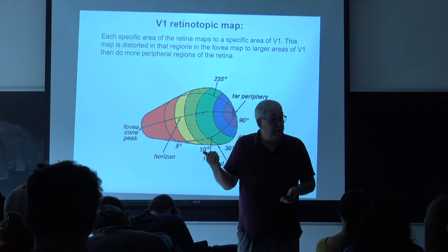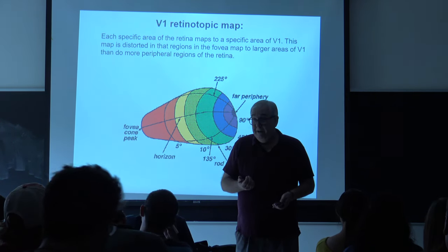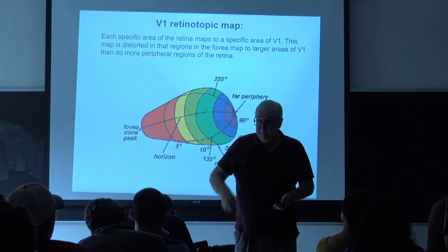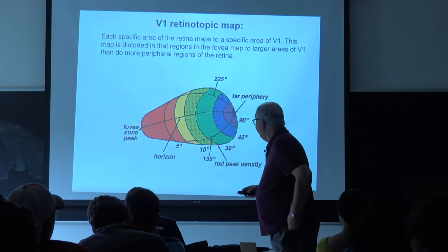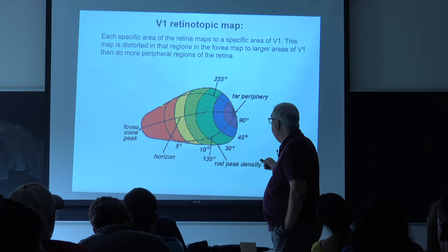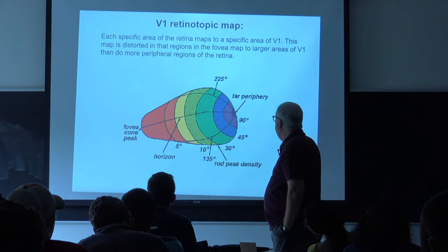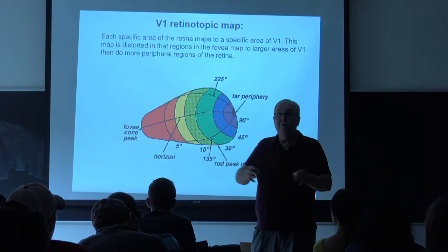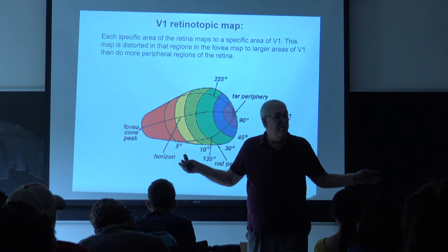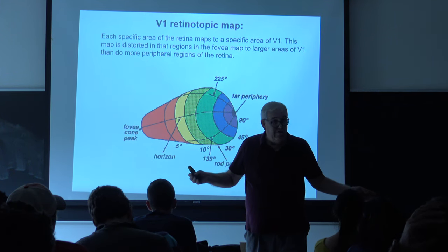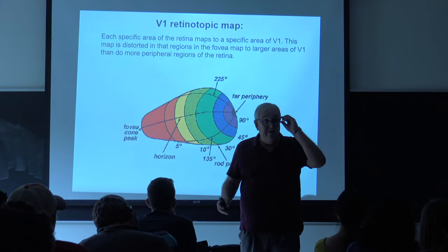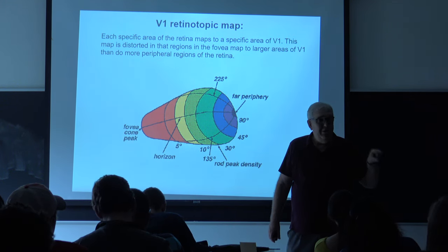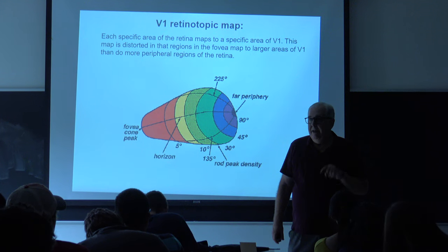The image in the eye is upside down. A major chunk of the visual cortex is devoted to processing the fovea, and as you get farther out in the periphery, there's less cortex devoted to it. So you actually don't know very much about what's happening in the periphery.